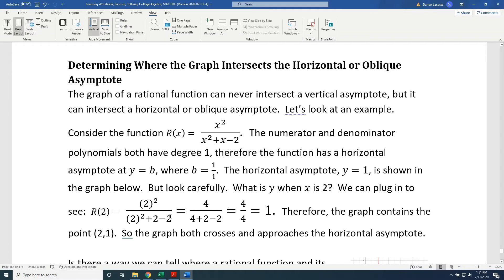The topic of this video is determining where the graph of a rational function intersects a horizontal or oblique asymptote. The graph of a rational function can never intersect a vertical asymptote, but it can intersect a horizontal or oblique asymptote. Let's look at an example.